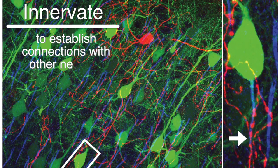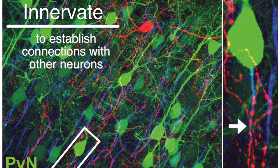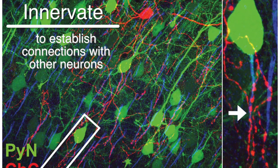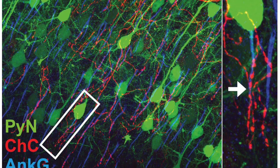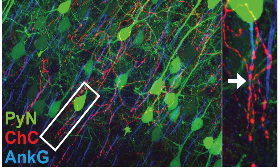the axon initial segment, which is labelled in blue here, of the pyramidal neuron, which is the most excitable part of the neuron where the action potential is initiated.